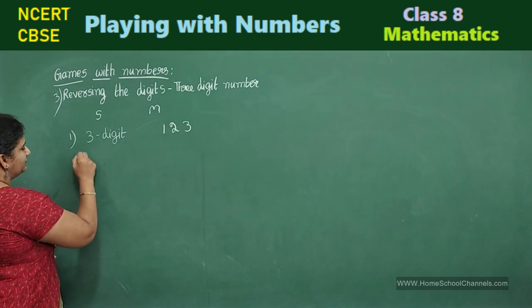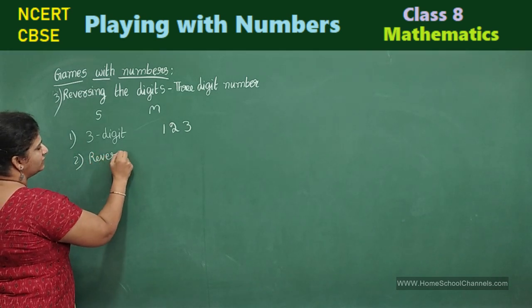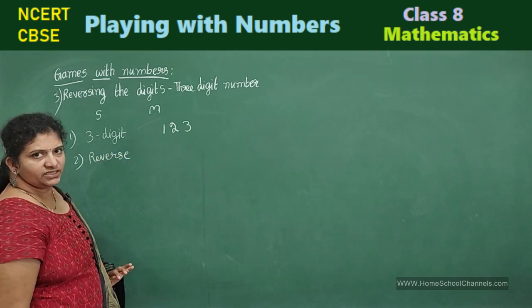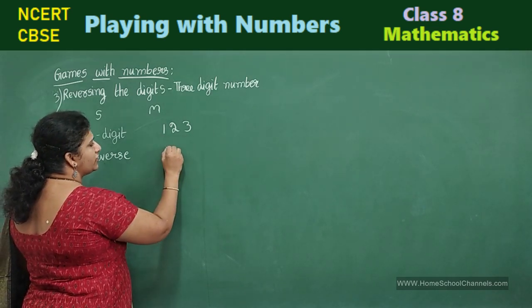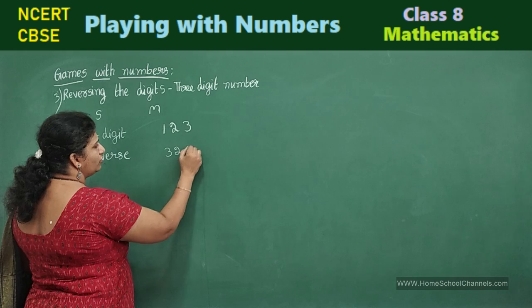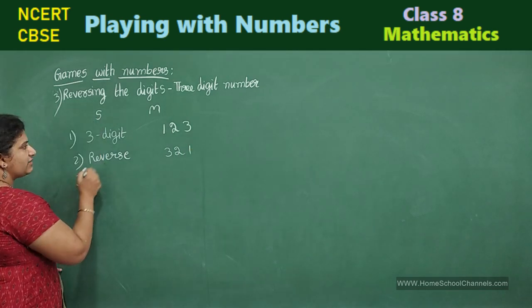Next step. Reverse the three digit number. Reverse this three digit number. Reverse means 1, 2, 3. From reverse order you write 3, 2, 1.